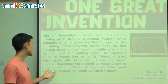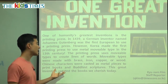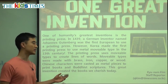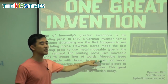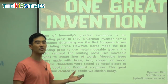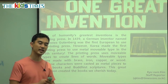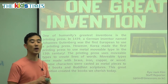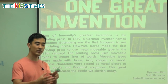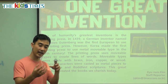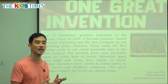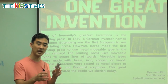Movable types were made with brass, iron, copper, or wood — all very, very hard materials, not soft materials. Why are they hard? Because we have to use them again and again. We don't use the letter A one time; we have to use it many times.